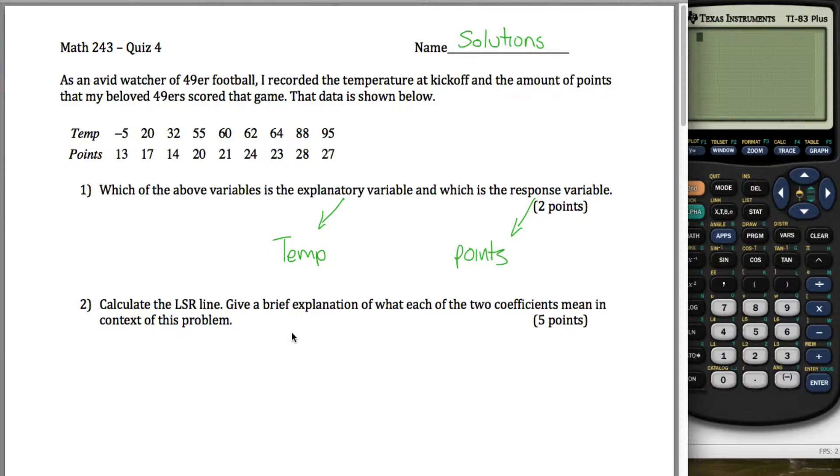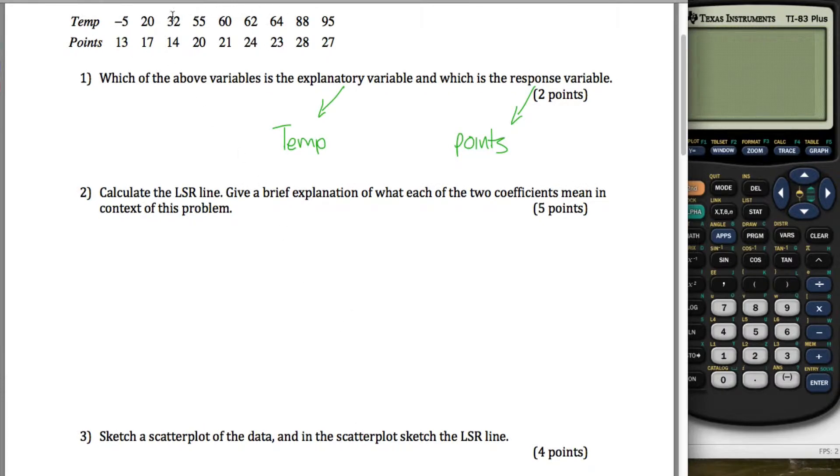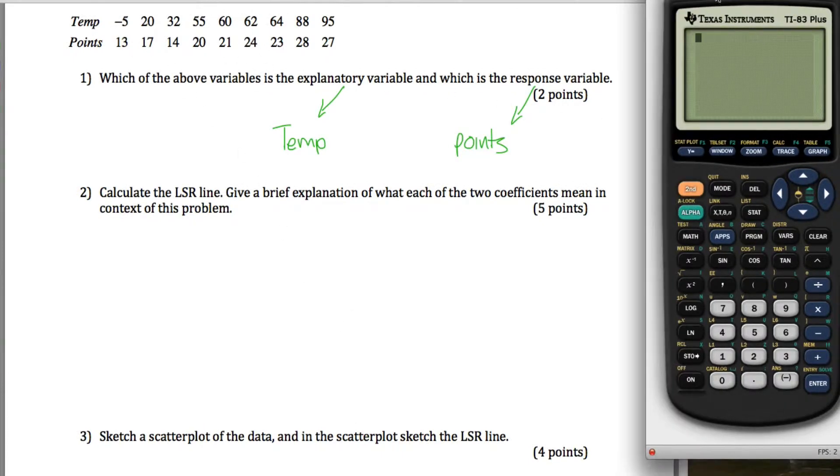Calculate the least square regression line. Give a brief explanation of what each of the two coefficients mean in context of this problem. To do that, the first thing you want to do is enter all your data into your calculator. I already went ahead and did that. You go into stat and then edit. I put my x variables, my explanatory variables in L1, and my response variable, the amount of points scored, in L2.